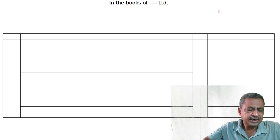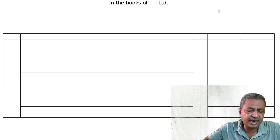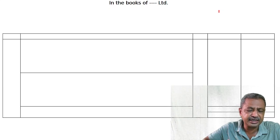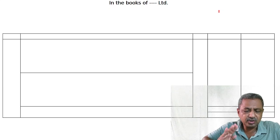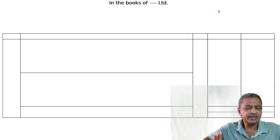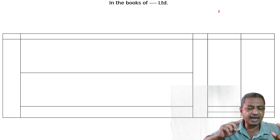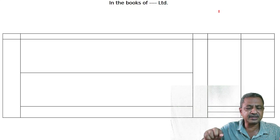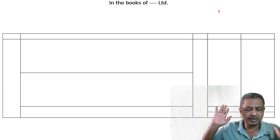Question is: Anthony Limited issued 20,000 9% debentures of 100 each at a 10% discount, to Mithu Limited from whom assets of 23,50,000 were purchased and liabilities of 6,00,000 were taken over.